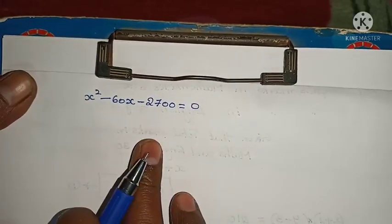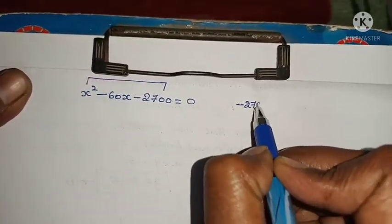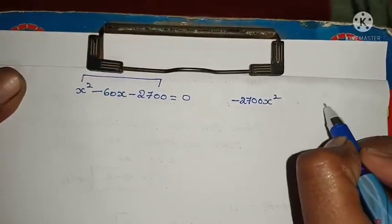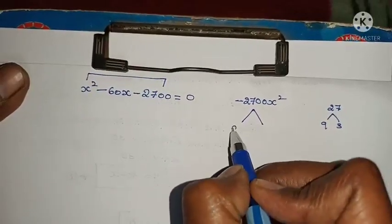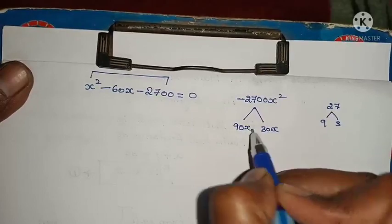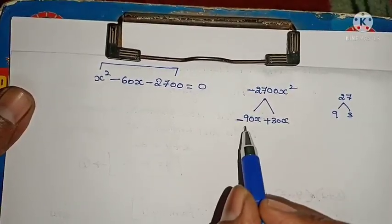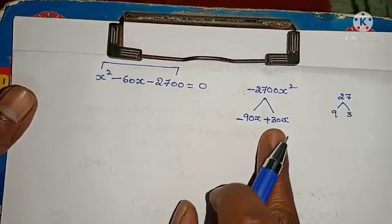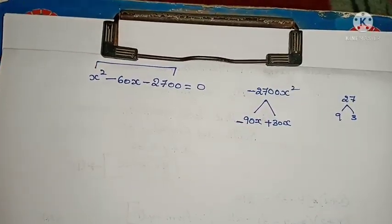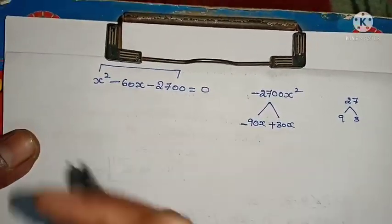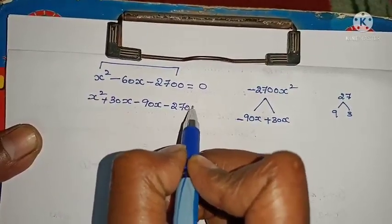Multiply first term and last term: minus 2700 X squared. Leaving zeros, for 27 the factors are 9 and 3 (9 times 3 equals 27), and 90 minus 30 equals 60. So take 90 and 30. The symbol is minus, so bigger number minus, smaller number plus: minus 90X and plus 30X. Check: minus 90 times plus 30 gives minus 2700 and minus 90 plus 30 gives minus 60. Substitute: X squared plus 30X minus 90X minus 2700 equals 0.